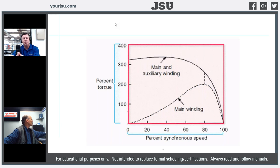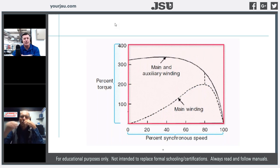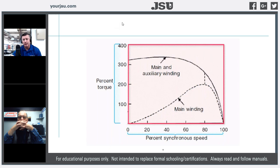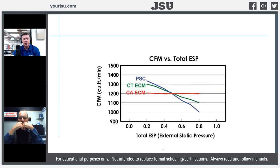We use the capacitor to assist the starting torque of our PSC motor, then keep it in the circuit so the start winding helps maintain operating horsepower torque at higher RPMs. But as we add static pressure and increase back pressure on a PSC motor and increase RPMs, we significantly lose capable torque — which is why we're starting to move away from PSC motors. But we still have them to work on, and they'll be around for a while.